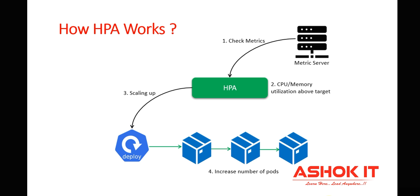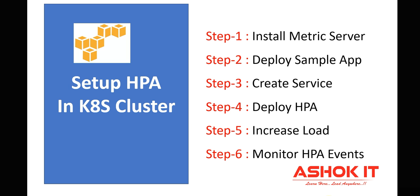Here we need to install the metric server, deploy our application, and deploy horizontal pod autoscaler in our cluster. Then we can see practically whether pod count increases or decreases. To set up HPA, I am going to follow six steps: install the metric server, deploy a sample application, expose those pods using a service, deploy horizontal pod autoscaler, increase the load on the application, and then monitor the HPA events to see whether it increases the pod count. Let's jump into practicals now.